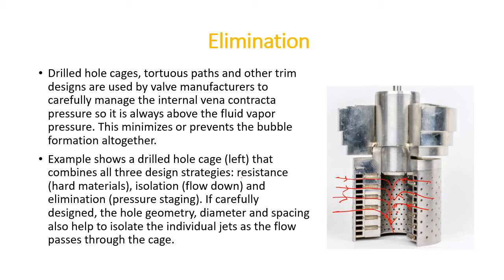In this particular design, three strategies are combined: resistance using hard stellited material; isolation because flow goes downward so cavitation occurs in the middle of the pipe and trim, not affecting the trim or body parts; and elimination by pressure staging, which prevents cavitation from occurring. If carefully designed with the correct geometry, diameter, and spacing, it will help isolate the individual jets as the flow passes through the cage.